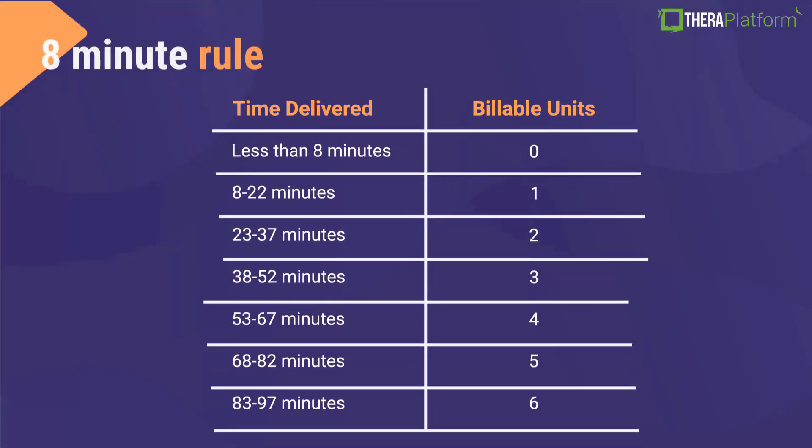Here is an easy-to-follow table that helps you convert time spent with the patient or client into billable units. If you are taking this video course on our website, I will email you the PDF so you'll have this information handy. As you can see, if you spend less than 8 minutes with the client or patient, this equals 0 billable units — so at minimum, you should always see a client for 8 minutes if you are billing insurance with a timed CPT code. If you see someone between 8 to 22 minutes, that would be 1 unit.